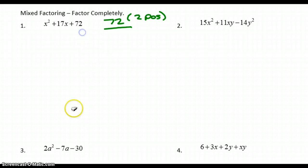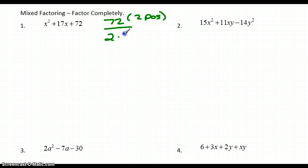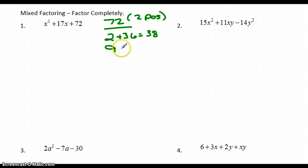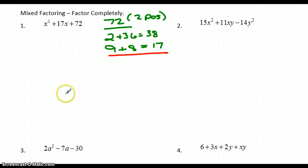I think about factors of 72. For example, 2 times 36 is 72, but that won't work because they add to 38, not 17. I just keep trying, looking for pairs that multiply to 72. I know that 9 times 8 is 72, and 9 plus 8 equals 17 — that's the correct pairing to give me the 17 in the middle.